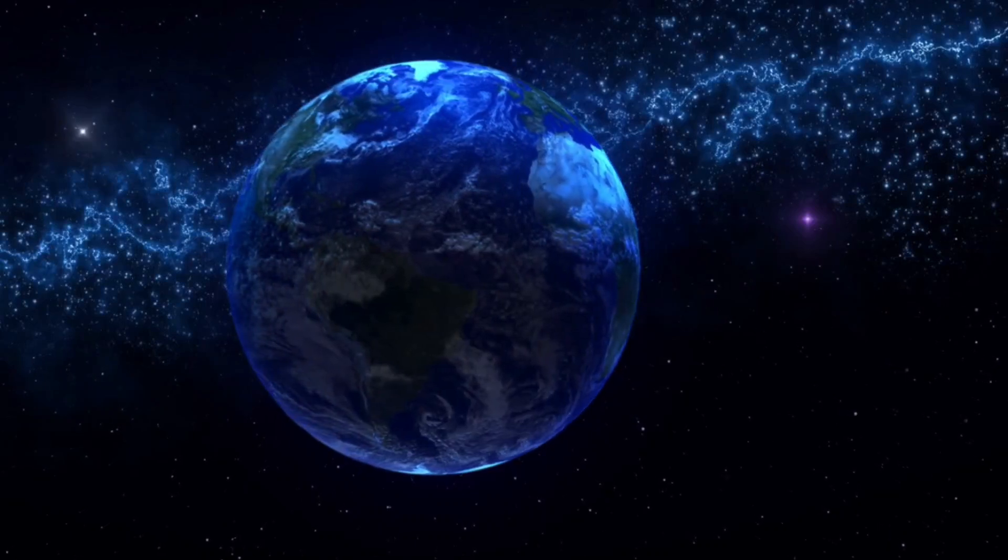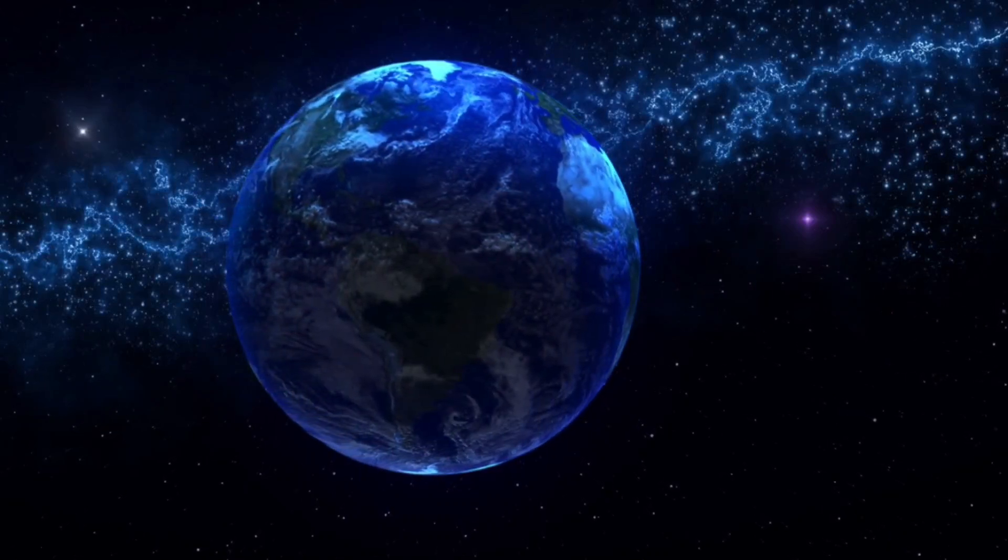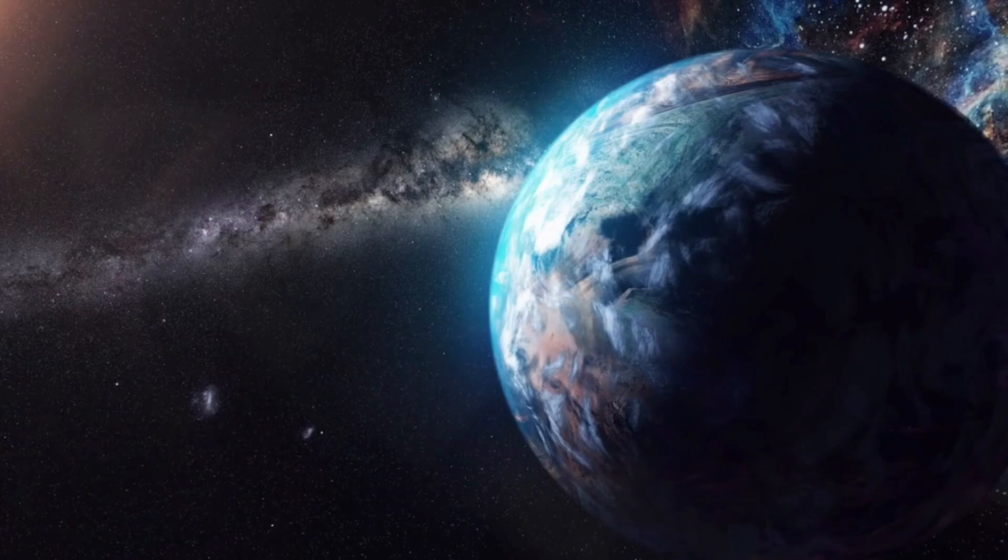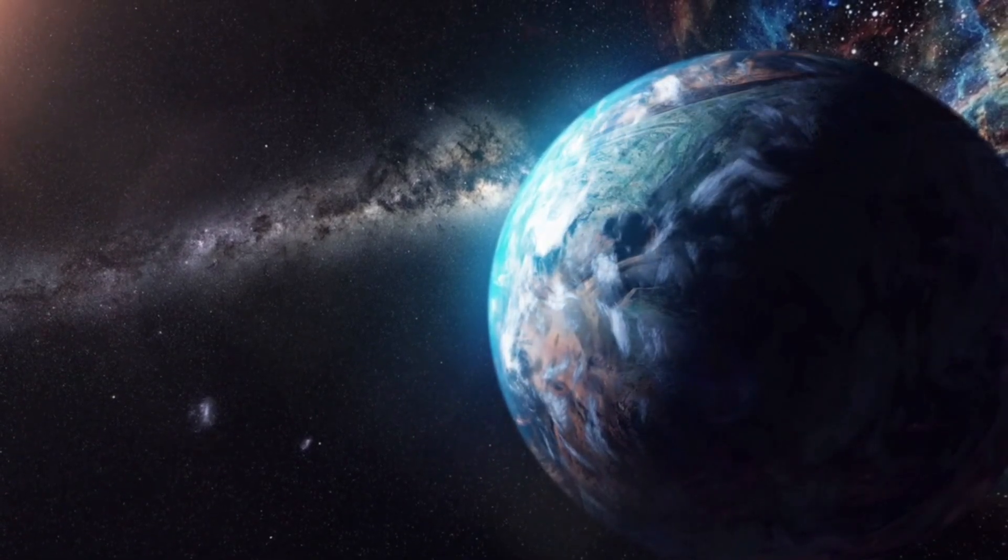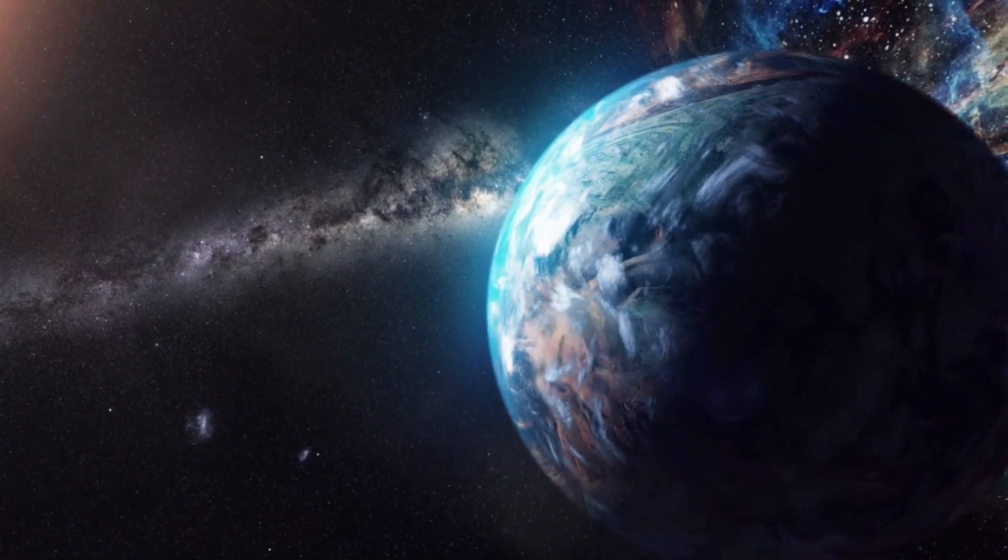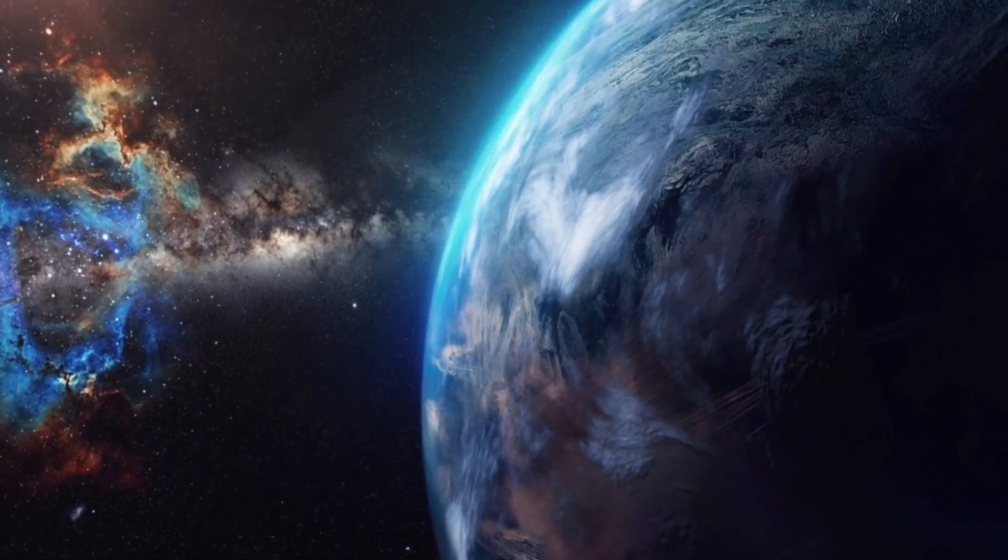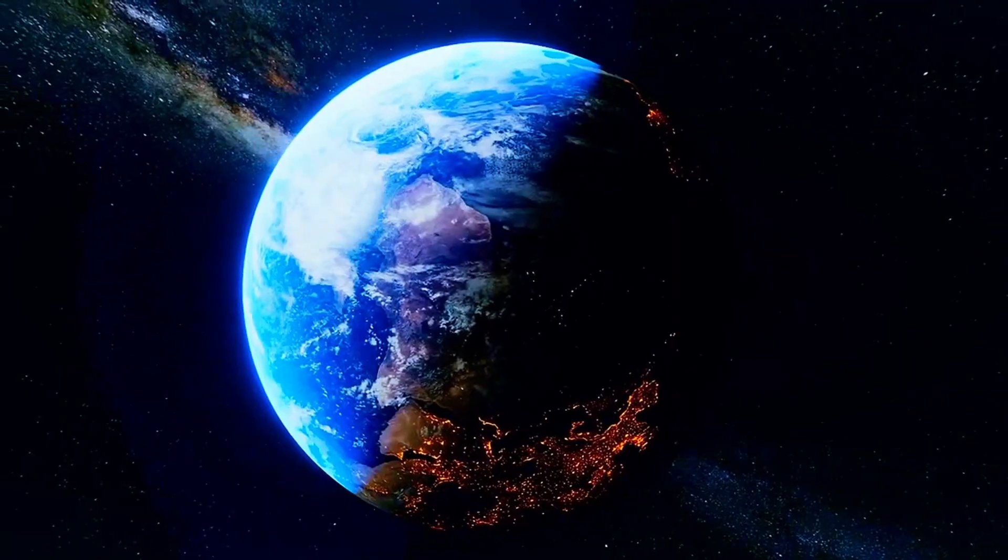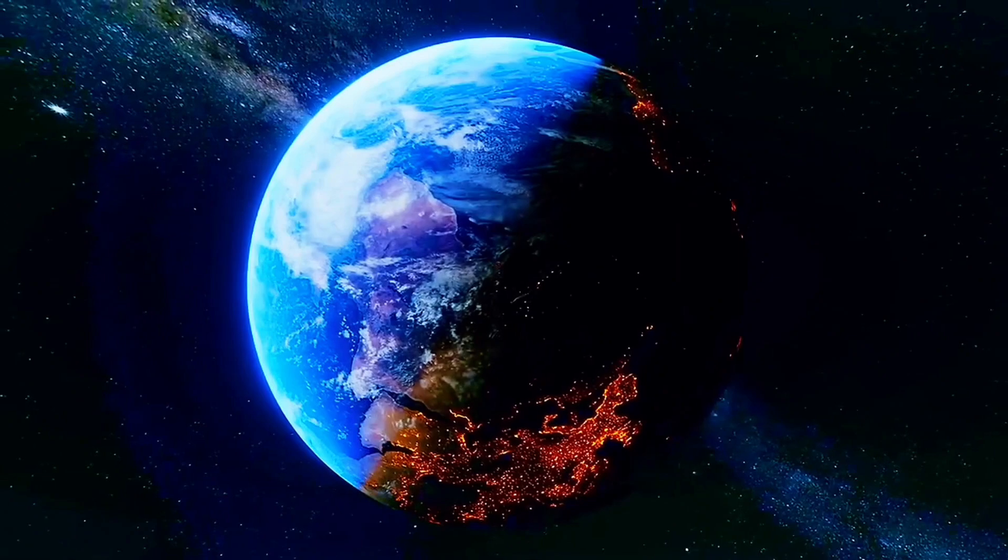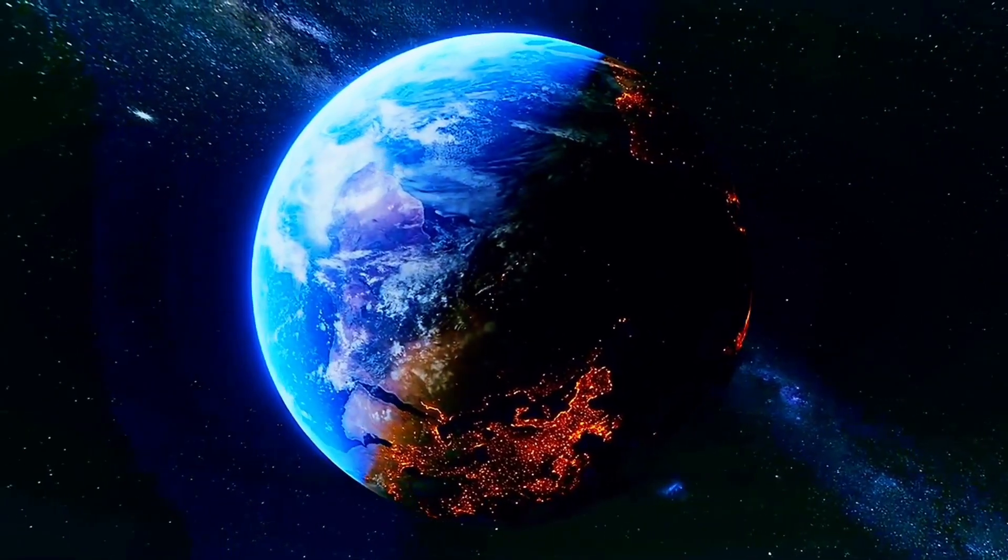For years, we stared at Jupiter and told ourselves we understood it. A gas giant, a massive ball of storms and hydrogen, a relic of the early solar system. But what if that story was never the full picture? What if Jupiter wasn't just a chaotic world of weather systems and volcanic moons, but something far more calculated and perhaps even aware?